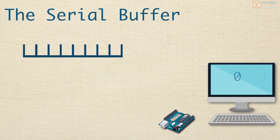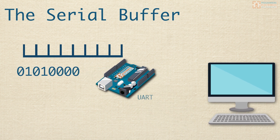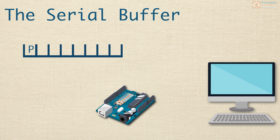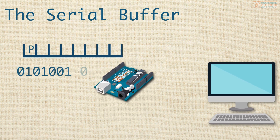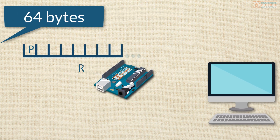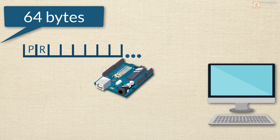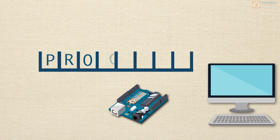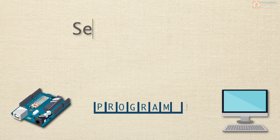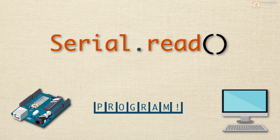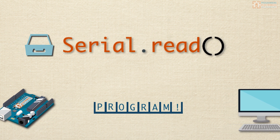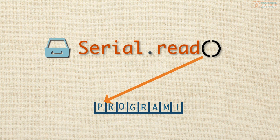When bits of data start streaming in from your computer, a piece of hardware on your Arduino called a UART will assemble each of the eight bits into a byte and store those bytes in the serial receive buffer. The serial receive buffer can hold 64 bytes. The data you send from your computer to your Arduino will end up there. That is where Serial Read comes in — Serial Read reads out the first available byte from the serial receive buffer, and when it reads it out, it removes that byte from the buffer.